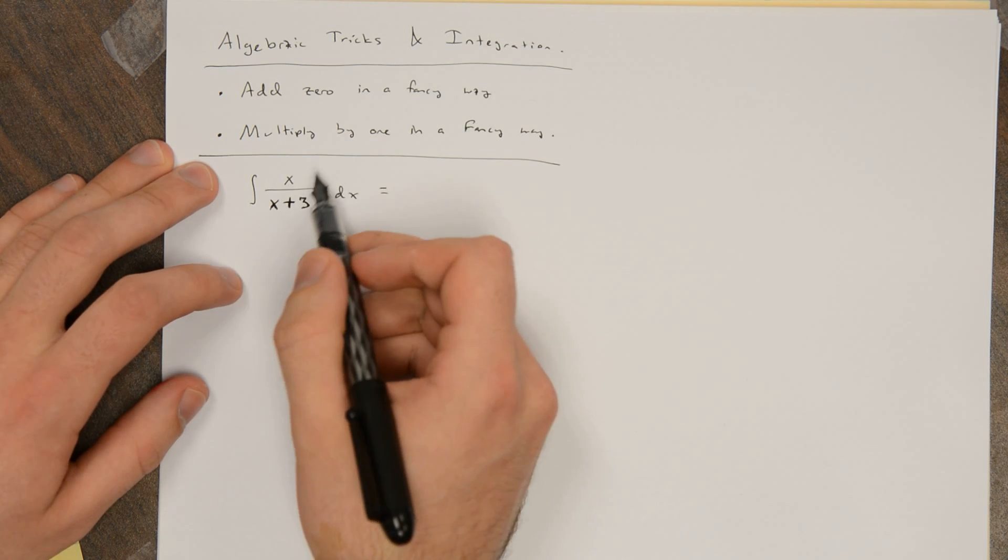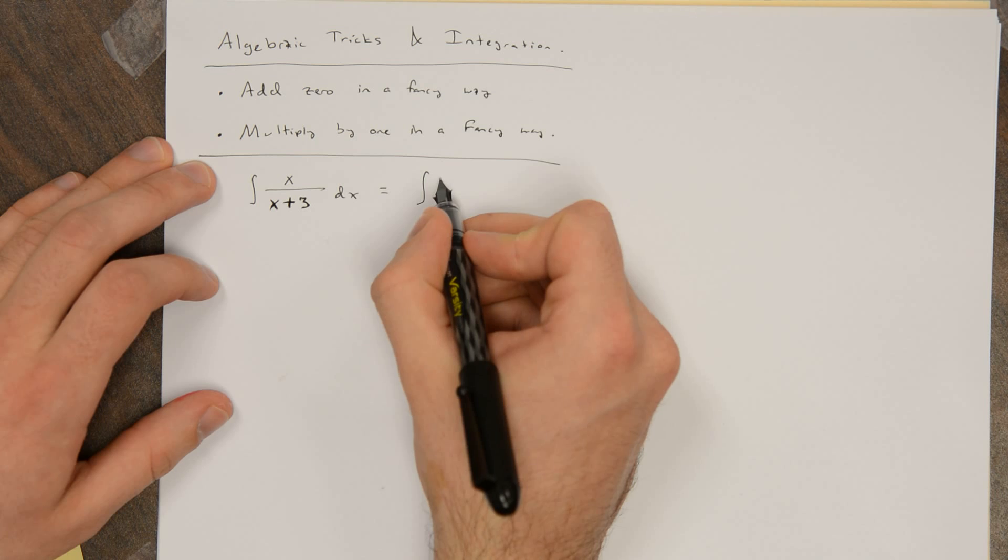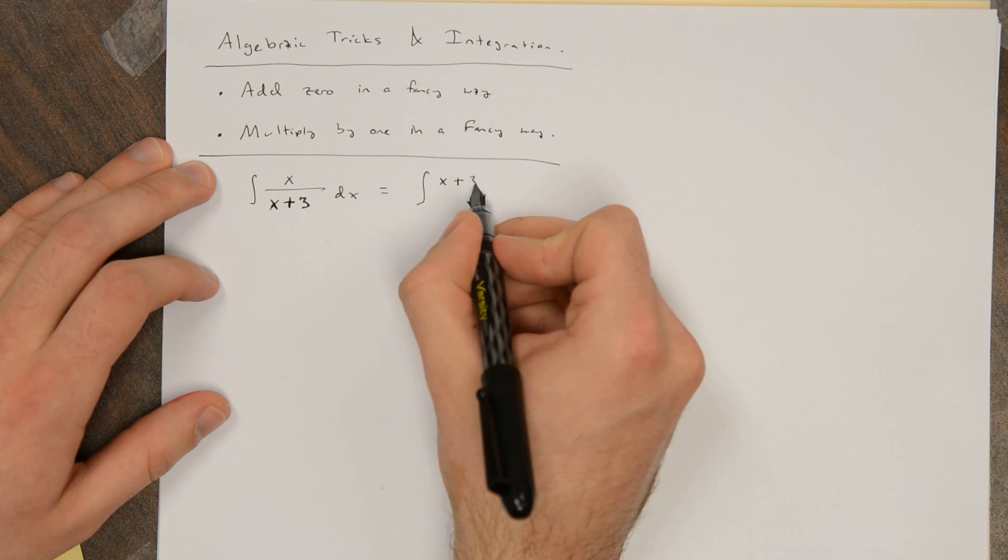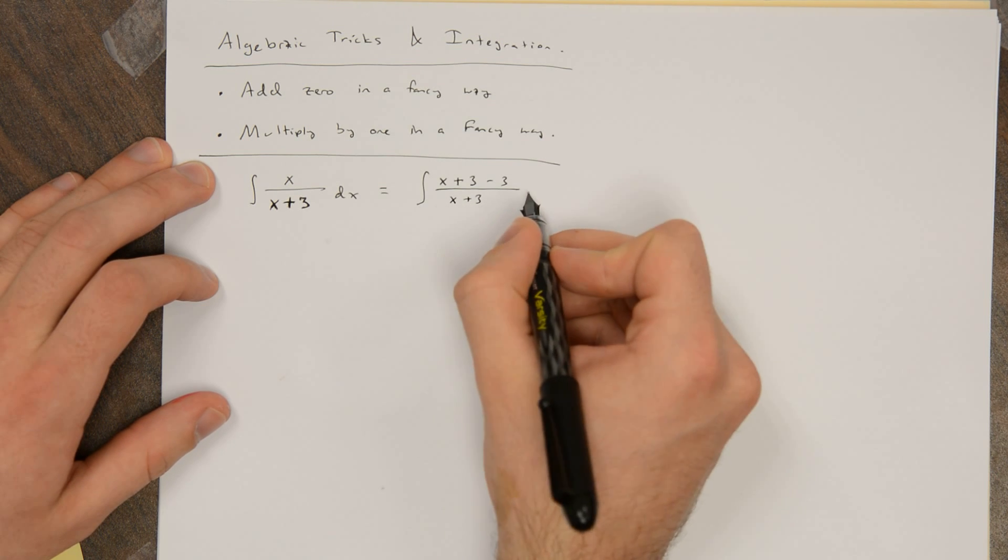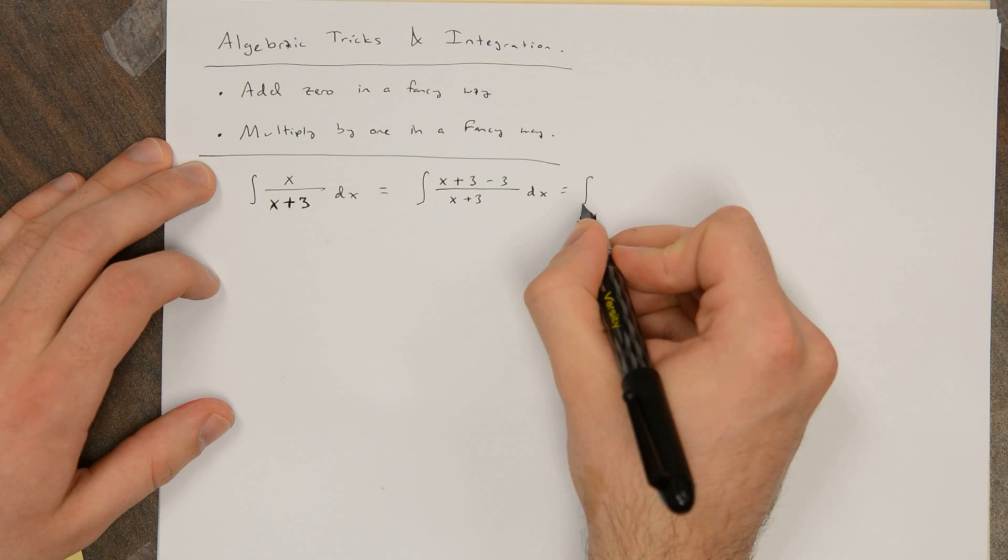wouldn't it be nice if there was a plus 3 here? Because then this would just be 1. So what I can do is, x is x plus 0, and 0 is plus 3 minus 3.